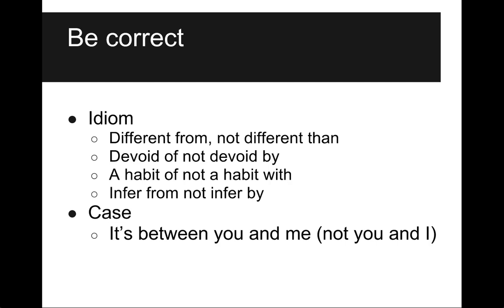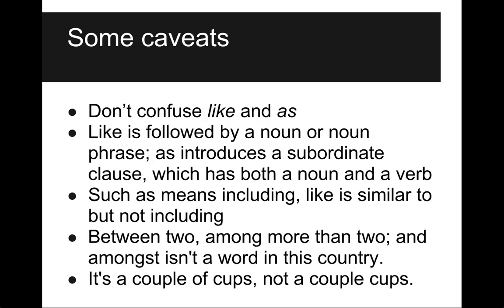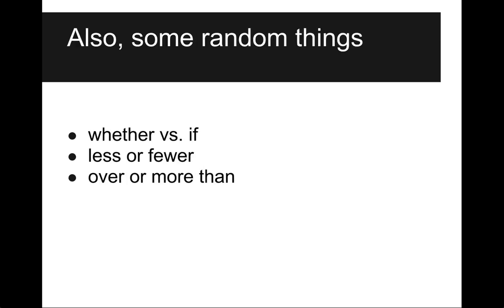There's a good list of these things in Working with Words. A few caveats: don't confuse 'like' and 'as.' 'Like' is followed by a noun or noun phrase. 'As' introduces a subordinate clause, which has both a noun and a verb. 'Such as' means including; 'like' is similar to but not including the thing that comes after it. 'Between' is used for two things; 'among' is for more than two. And 'amongst' isn't a word in this country. Also, it's 'a couple of cups,' not 'a couple cups' — leaving out the 'of' after 'couple' when referring to an object. Remember the difference between 'whether' versus 'if,' 'less' or 'fewer,' 'over' or 'more than' — 'over' is above; 'more than' is more than, and it's usually a numerical thing.